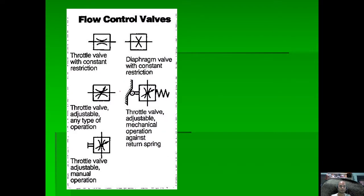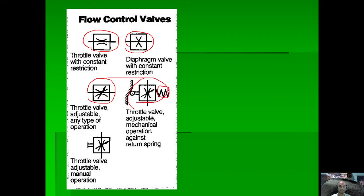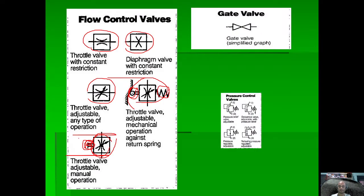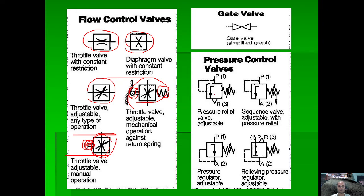For flow control valves: a throttle control valve with constant restriction, a diaphragm valve with constant restriction, a throttle valve adjustable with variable operation, a throttle valve adjustable with spring return and mechanical roller-type operation, and a throttle valve adjustable with manual operation. We also have a gate valve.